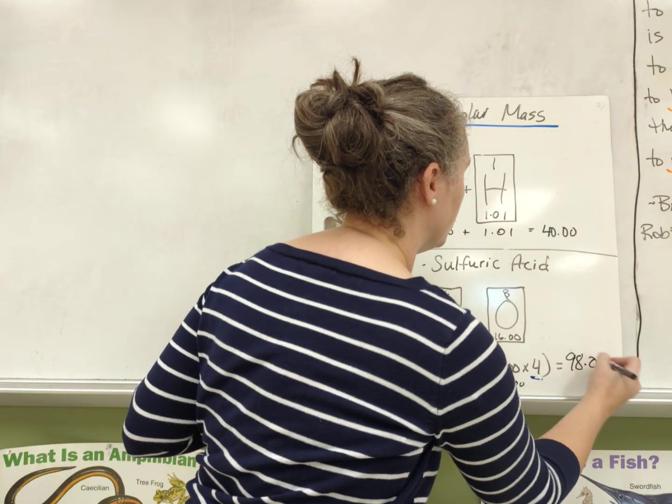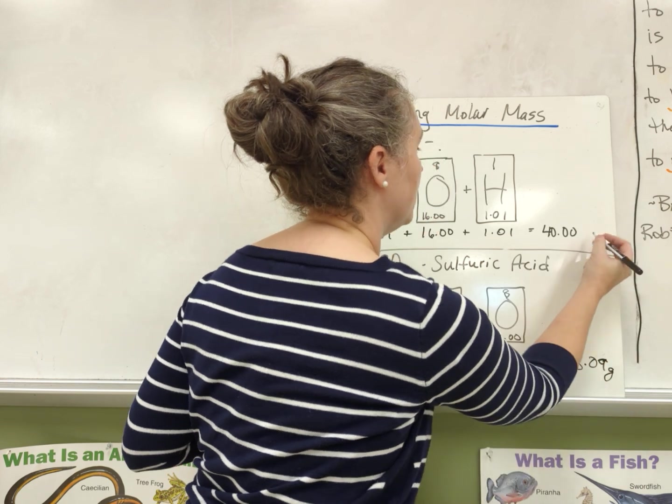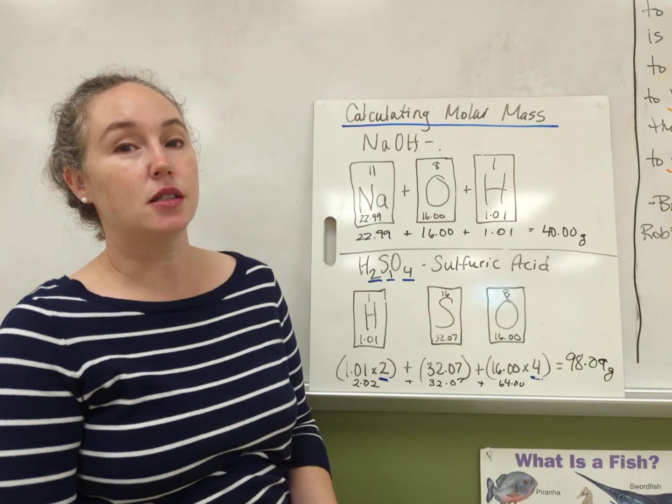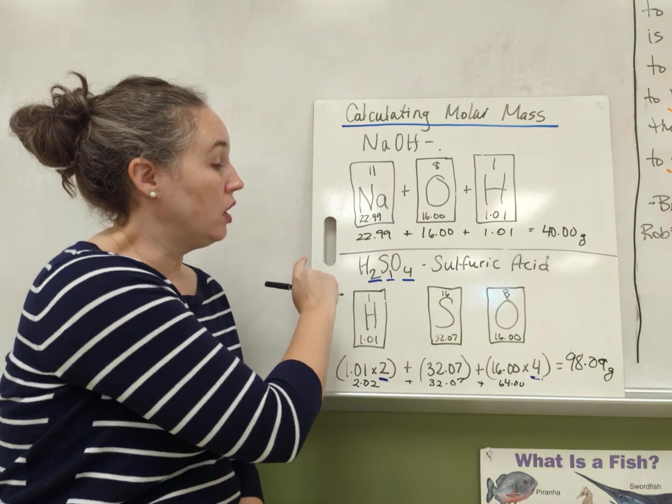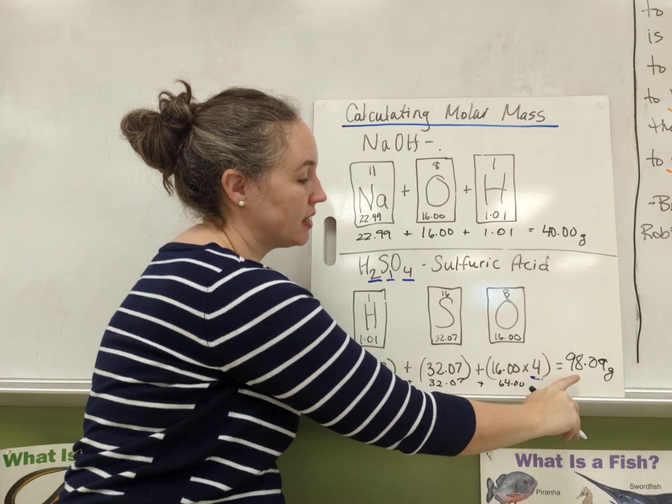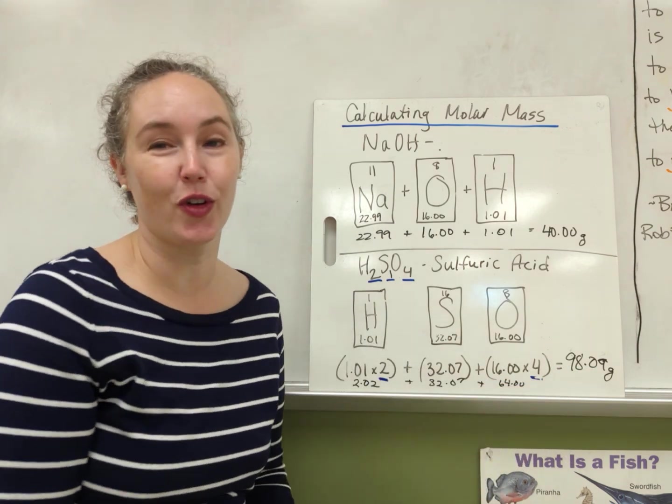2.02 plus 32.07 plus 64 equals 98.09 grams. It's the mass in grams of one mole of this. So one mole of H2SO4 has a mass of 98.09 grams.